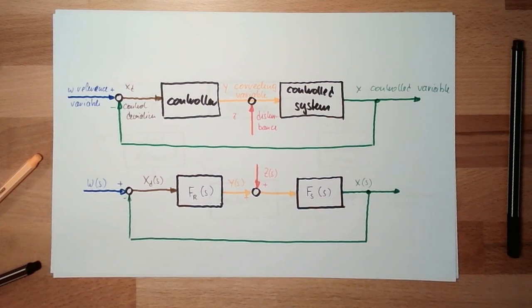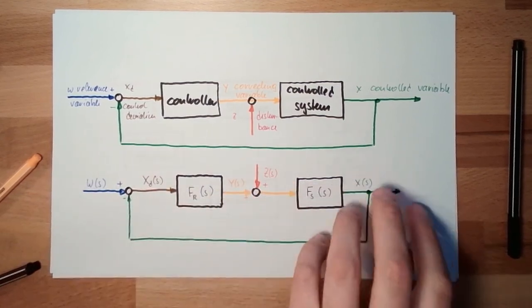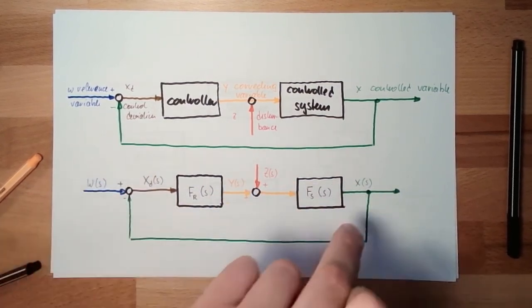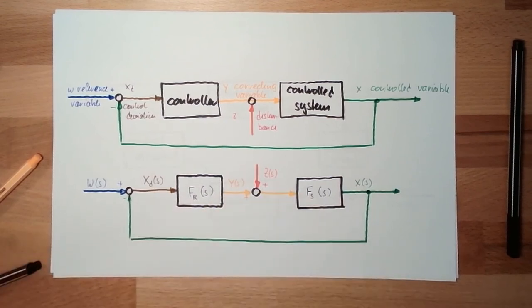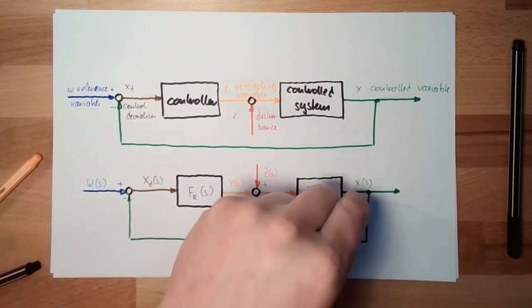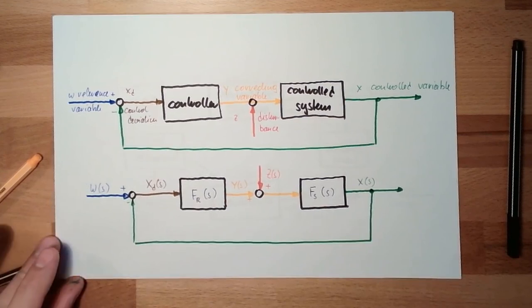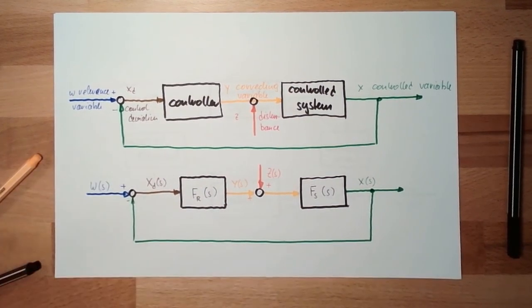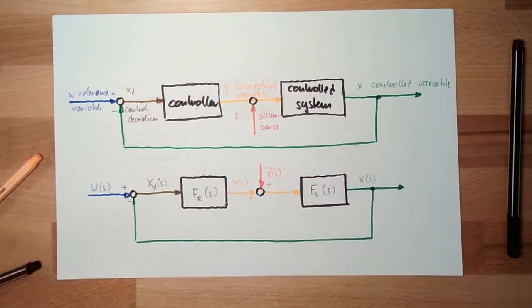In the next video we are going to calculate the transfer function. We want to see the complete transfer function from w to x(s). We also want to see how the transfer function looks if there's no disturbance, and how disturbances influence x if there is no — or a constant — reference level. These two total transfer functions we are going to calculate in the next video. For now, you should remember this as our model of a control loop. Thank you very much for listening and goodbye.